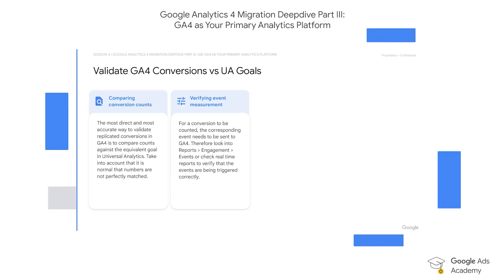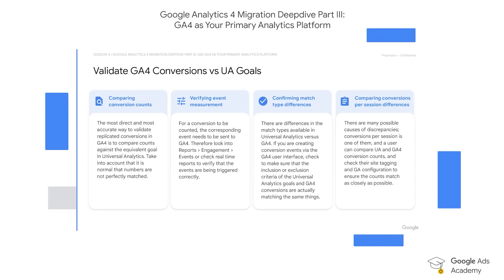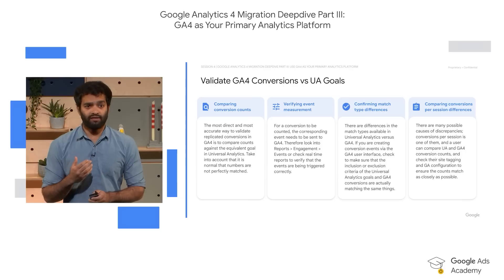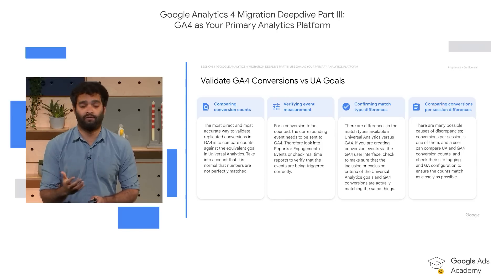As conversions in GA4 are event-based, ensure that the corresponding events for conversion actions are being triggered correctly — you can verify this in the Reports, Engagement, Events section in GA4. Also ensure that the match types and inclusion and exclusion criteria for the old UA conversion actions and new GA4 goals are the same. While some small discrepancies are expected for the number of conversions per session, we would recommend checking site-wide tagging and basic GA4 configuration to ensure there's nothing fundamentally wrong with how GA4 conversion actions have been set up.